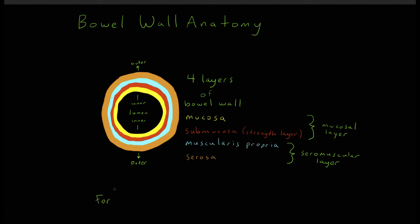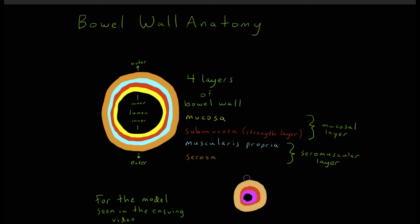In the second video describing the technical aspects of bowel anastomosis, we will present a video demonstration of a bowel anastomosis that uses a bowel model whose bowel wall layers are color-coded. In this model, the seromuscular layer is skin-colored, the submucosal layer is red, and the mucosal layer is pink.